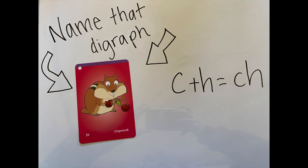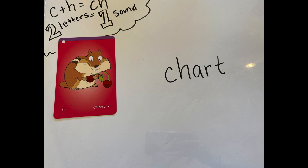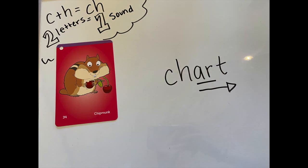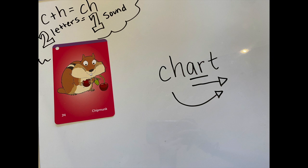One more digraph for us today. I see that C and H together make the CH sound, like our chipmunk. Let's all make our chipmunk sound together: ch, ch, ch. Now our first word — I already see a tricky word. A is my middle vowel, but it's not just A: I see A and R together. R is bossy — my armadillo card. I'm going to go R and slide right — ART. Add the beginning sound: CHART. My word is chart.